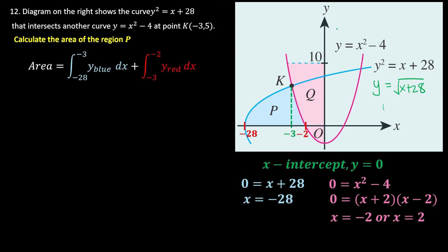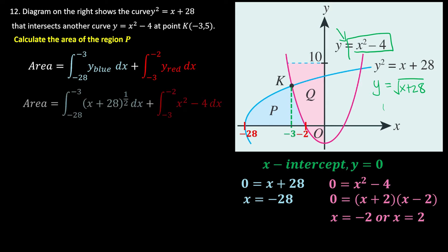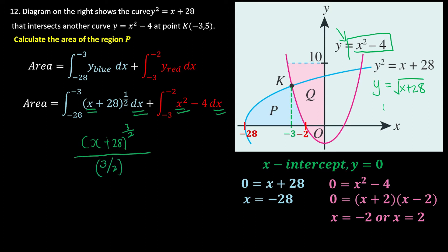The red curve is already given as y = x² - 4. Both equations are now in terms of x and we integrate with respect to x. The power increases by 1 to 3/2 divided by the new power. Since the bracket content differentiates to 1, it doesn't affect the result.